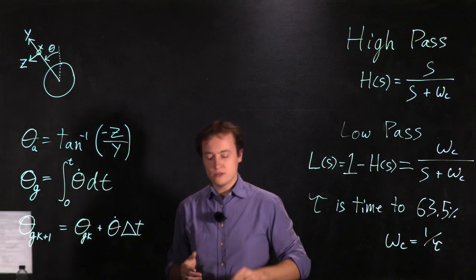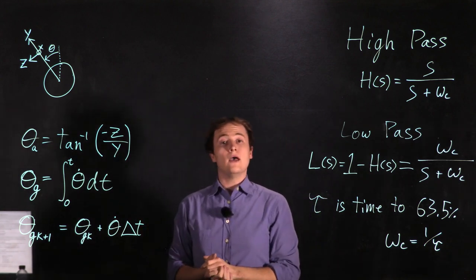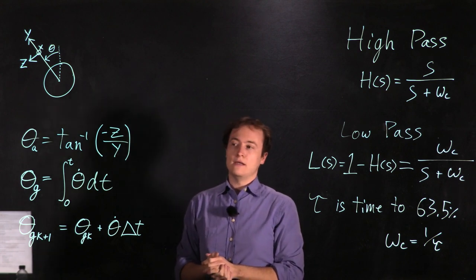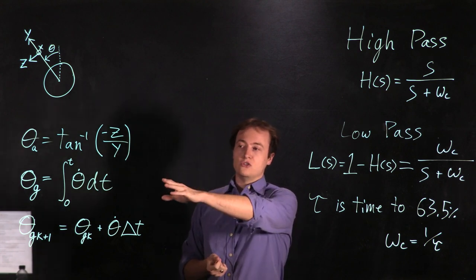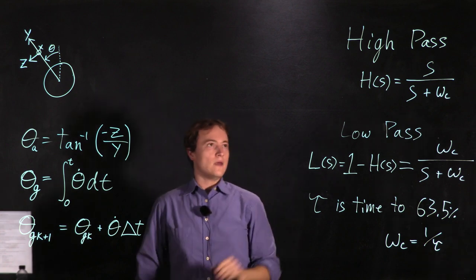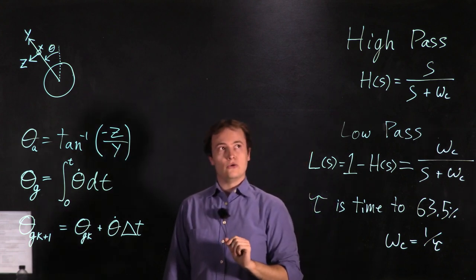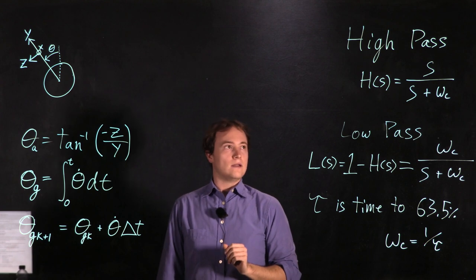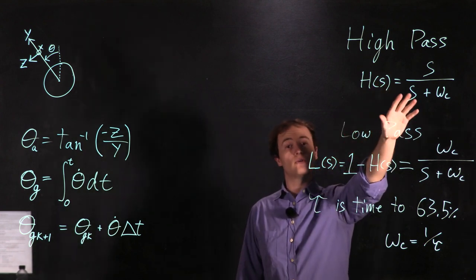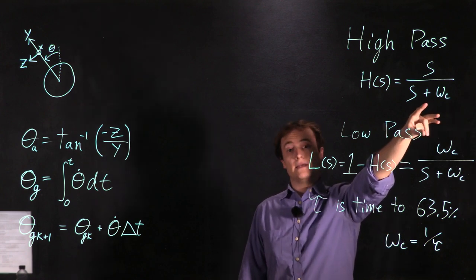Now we mentioned that we were going to combine these two and we're going to do that with a pair of filters and we will call these complementary filters. I mentioned that the gyroscope is particularly good at high frequencies and so let's start with this one. We're going to run the integral of the gyroscope value through a high pass filter. Now here we have the Laplace transfer function of a simple first order high pass filter with a crossover frequency of omega C.